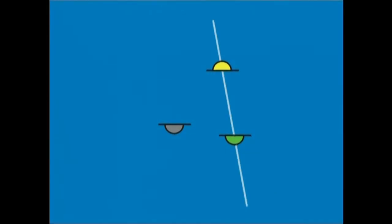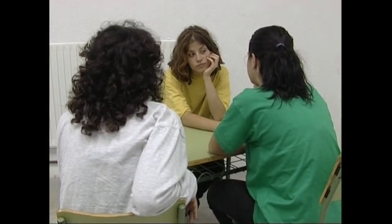Aktoreek triangelu edo iruki bat osatzen dute. Ekintzaren ardatza goitik behera ezarriko dugu, horiz jantzitakoa aktorea eta berdez jantzitakoa baitira, planuko aktore nagusiak. Kamera bat eta bi kokaguneetan jarriko dugu, eta ardatzari jarraikiz, taldea muntaila paraleloan ikusiko dugu.